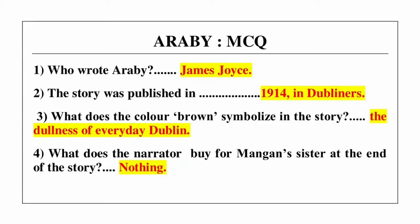Question number 1: who wrote Arabi? Answer is James Joyce. Question number 2: this story was published in 1914 in Dubliners.